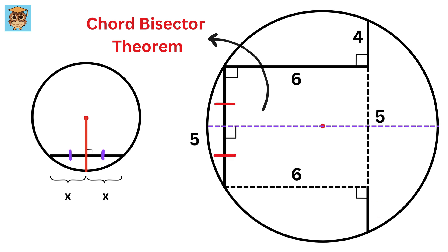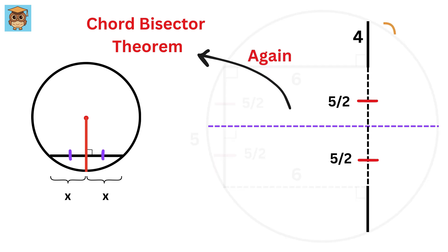Since this diameter will be the perpendicular bisector of this chord, and if these are 5/2, both of them will also be 5/2 as well. And since both of these lengths are the same, this segment will also be of length 4.